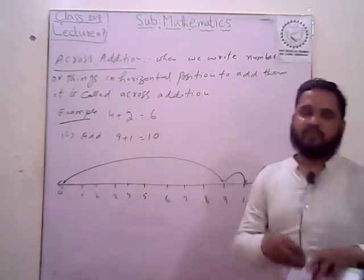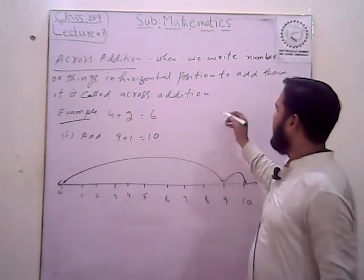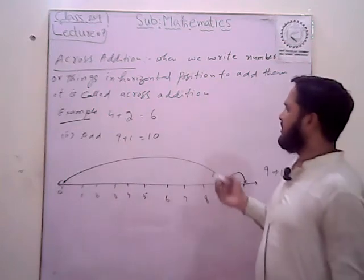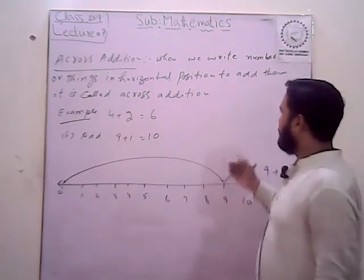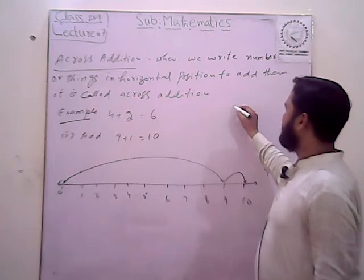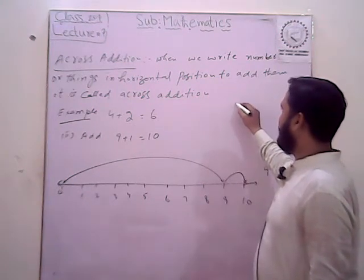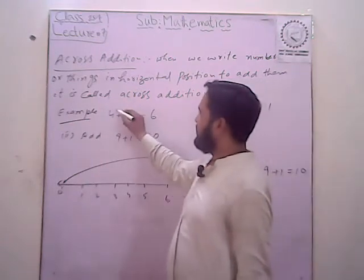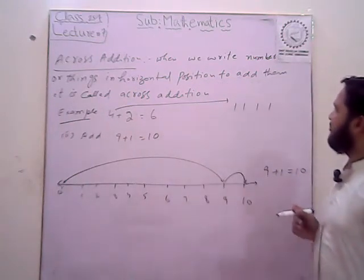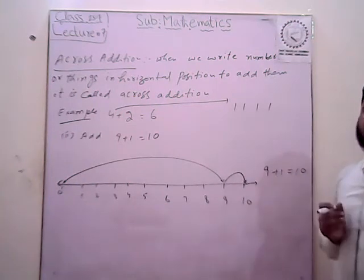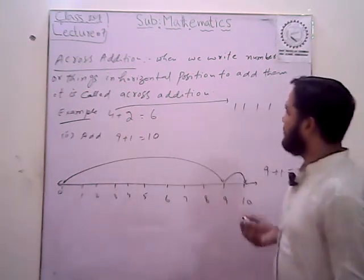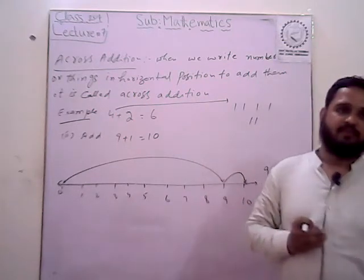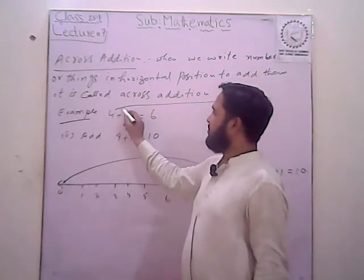Let me draw a line to illustrate. I'll tell you how to count — I'll draw a full line. 1, 2, 3, 4. Now this number will be shown in the form of lines: 1, 2. So which operation is applied here?